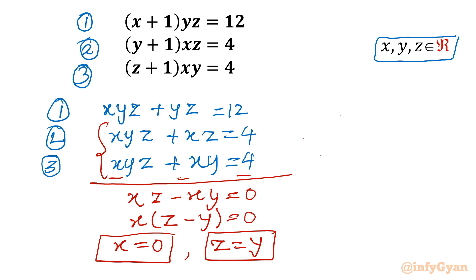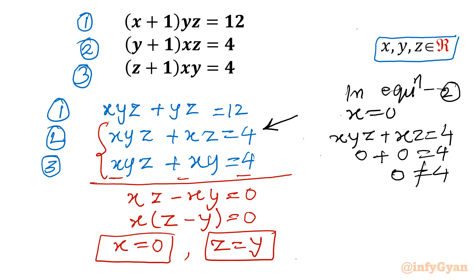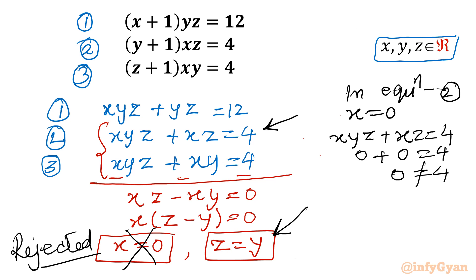If we plug x = 0 into equation 2, which is xyz + xz = 4, we get 0 + 0 = 4, which is false. So we reject the solution x = 0. The only accepted relation is z = y.